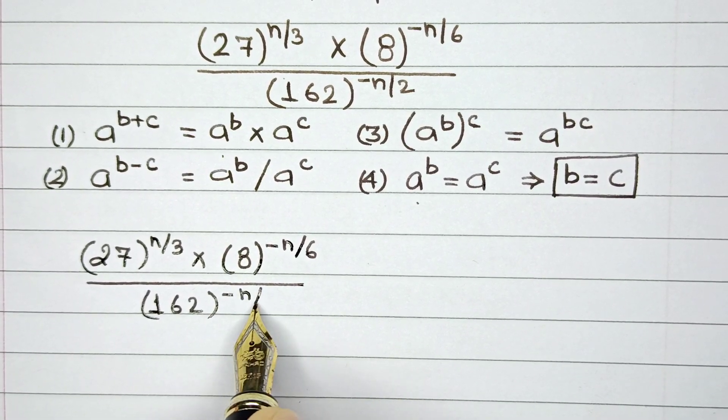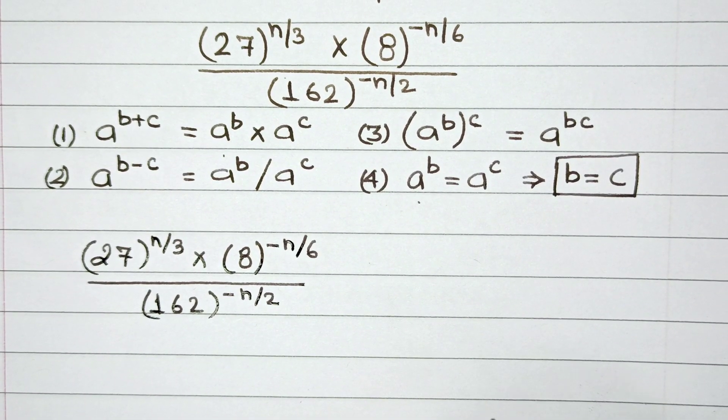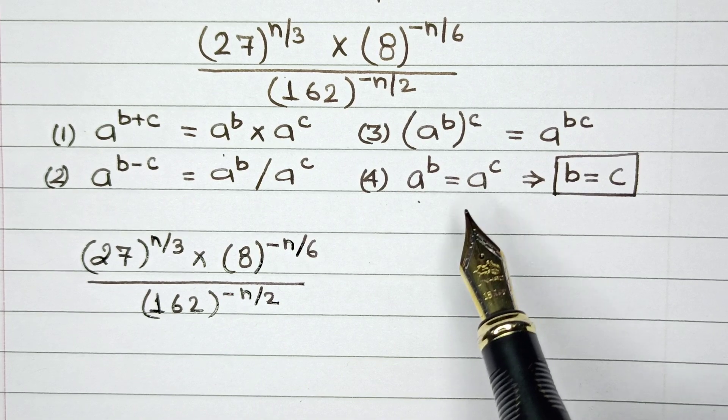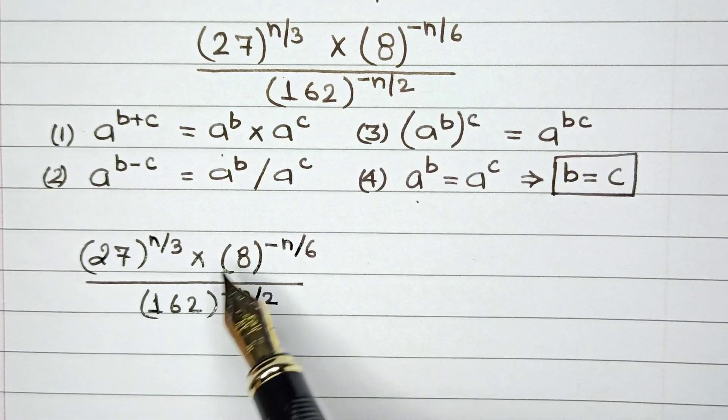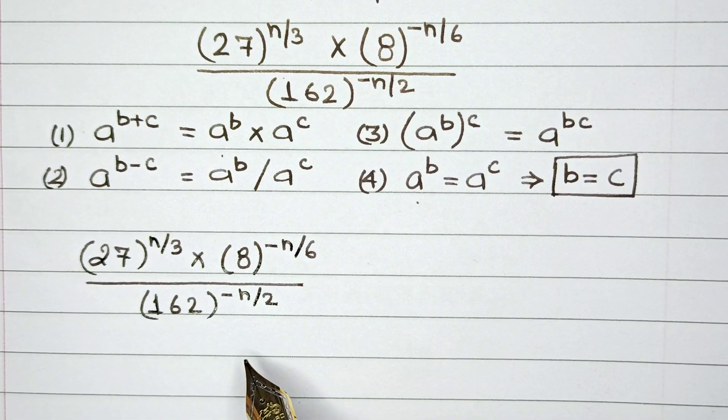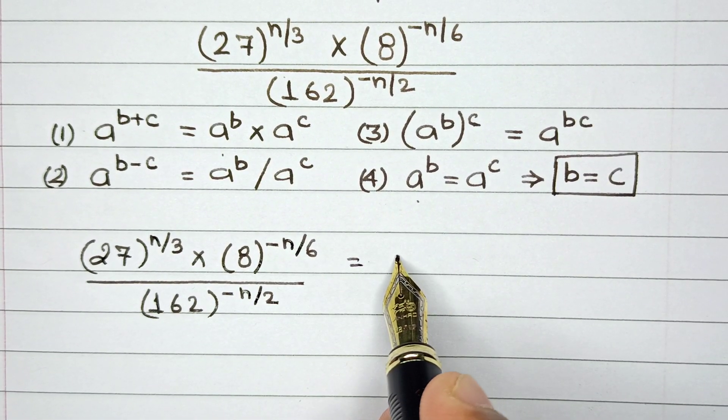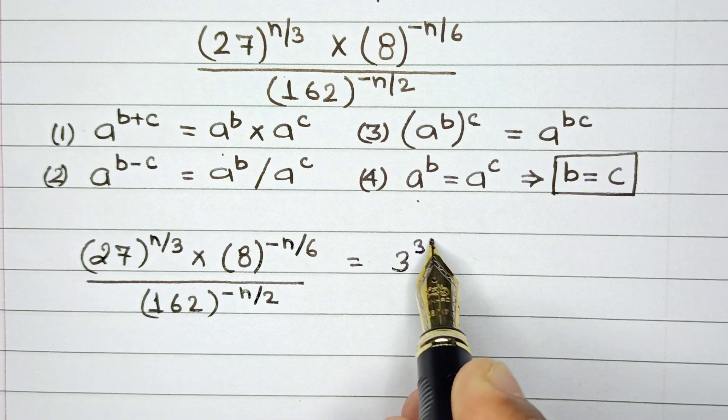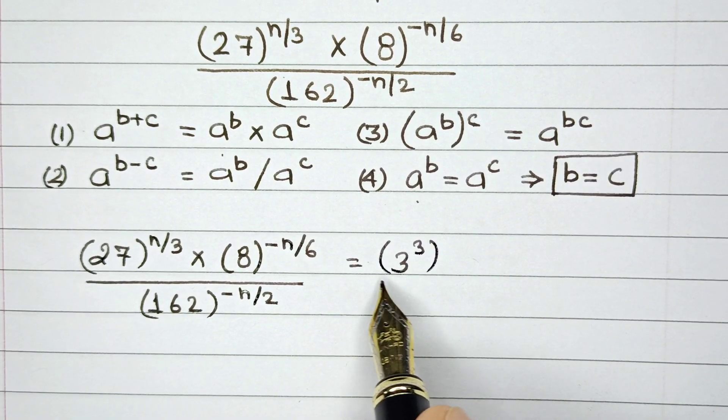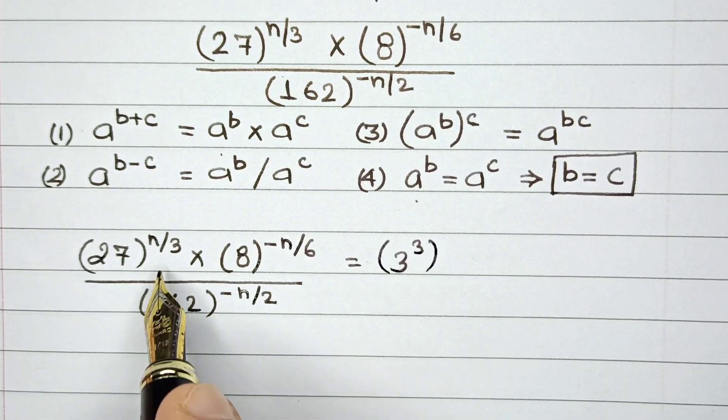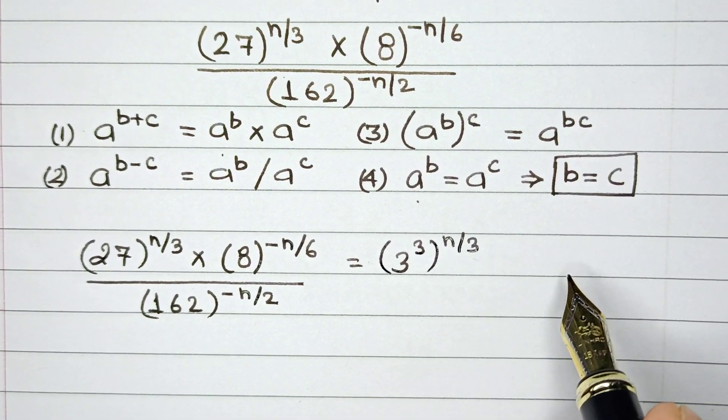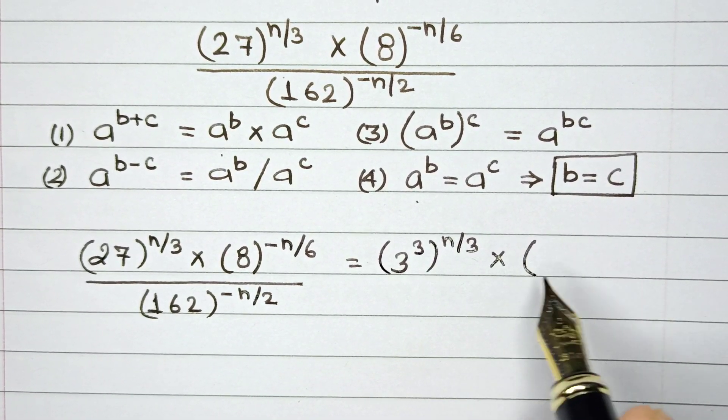...divided by 162 raised to the power of minus n by 2. So the thing is that in order to apply all these properties, the very first thing that you have to do is break down each number into its prime factors. So basically 27 for example can be written as 3 cubed, so in place of 27 let me write this as 3 raised to the power 3 and the outer power remains intact so this is n by 3.